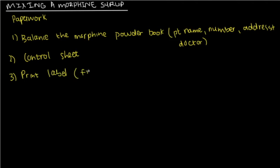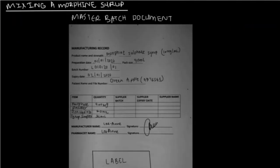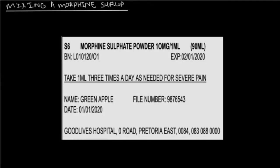Next, you're going to print the labels. You need one for your final container and one that you're going to paste on the master batch document. So, you paste the label on the master batch document after you've printed it. And then, you fill in the master batch document as thorough as you can at this point.